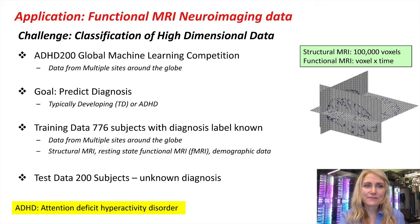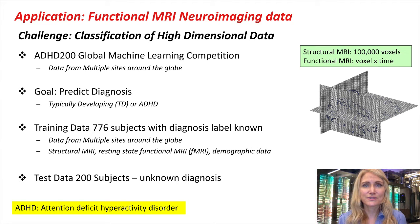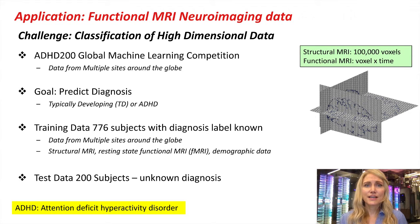Classifying these data can be very challenging for a number of reasons. First of all, these data are very high-dimensional. A structural MRI scan can consist of approximately 100,000 voxels, and an fMRI scan records signals from these voxels over time, resulting in four-dimensional data. The number of possible features and attributes that can be derived from these data are very large, and one of the recent events that highlights why this can be problematic was the ADHD 200 global machine learning competition.